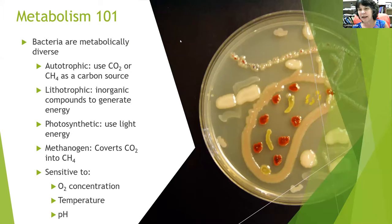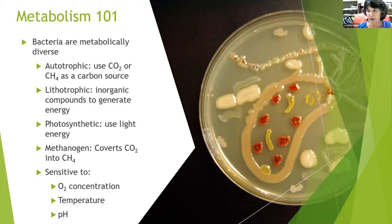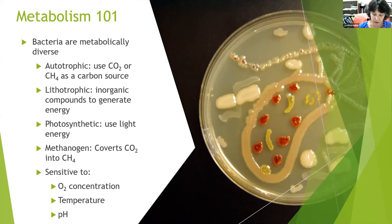Unlike animals or plants, bacteria are metabolically diverse. There are all kinds of bacteria and they can grow in all kinds of environments — the hot springs of Yellowstone National Park, deep sea thermal vents, the gut of animals, soil, and aquatic systems. In order to do that, they need different types of metabolisms that will let them survive in those particular environments.